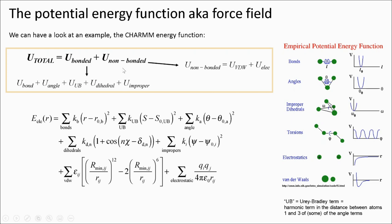The bonding energy is itself composed of the sum of the energy associated with the atomic bonds, the atomic angles, atomic dihedrals and atomic impropers. You may also wonder what the UB term stands for. This is a term that is found in the CHARMM force field specifically called the Urey-Bradley term and is described as the harmonic term in the distance between atoms one and three of some of the angle terms.